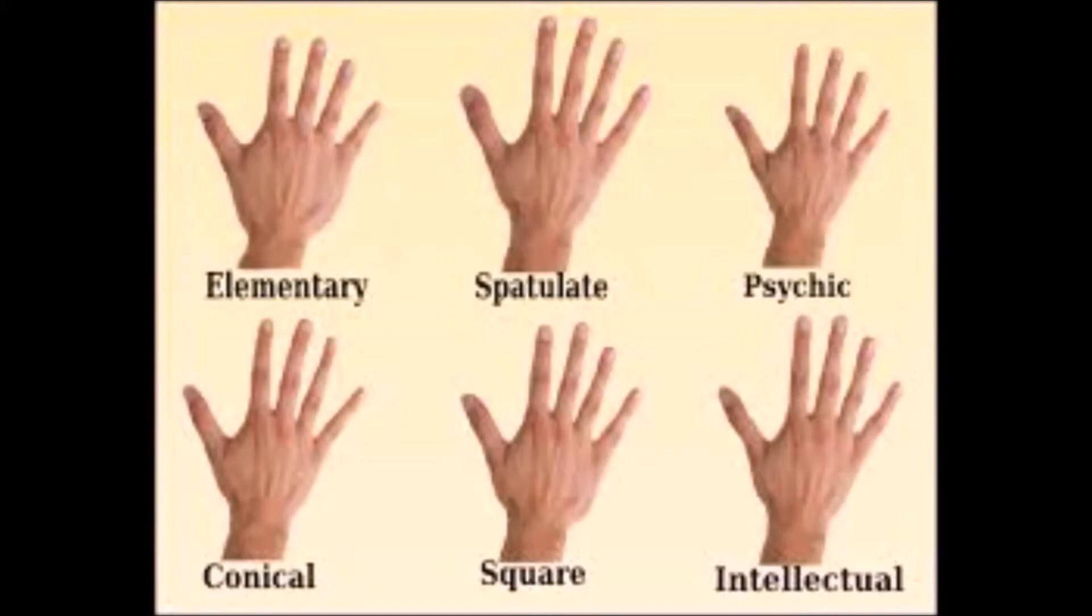The spatulate hand. The spatulate hand represents a very active person. The entire appearance of the hand is suggestive of the spatula. There are two types. One palm is wider at the wrist than at the base of the fingers. The second type is the reverse, wider at the top than at the wrist. The fingertips are spatulate. The hand spreads out fan shaped.